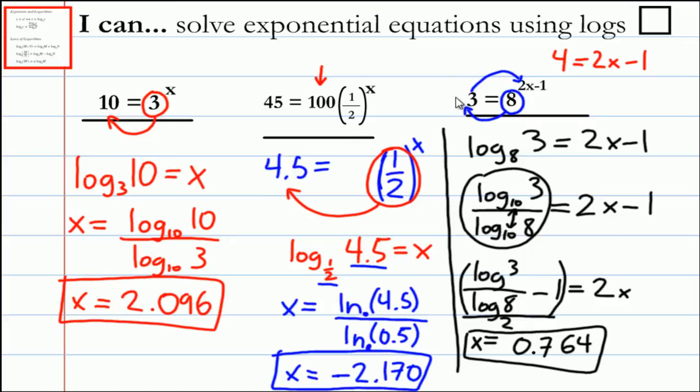In order to do this in your calculator, you would do log of 3 divided by log of 8, then subtract 1, and then once you get that result, divide by 2.